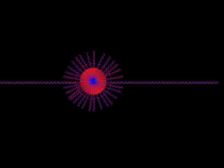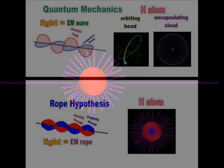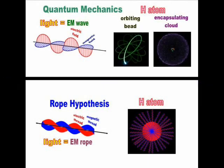Let us now compare the quantum mechanical bead and cloud model against the rope hypothesis and see how they measure up when attempting to explain phenomena such as bonding, ionization, and electricity.